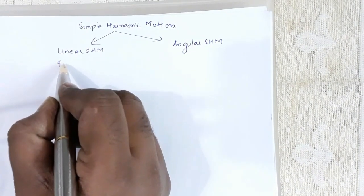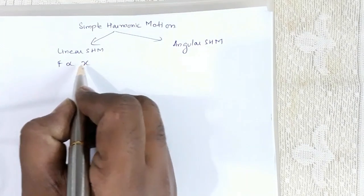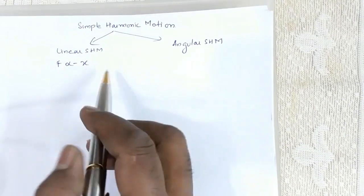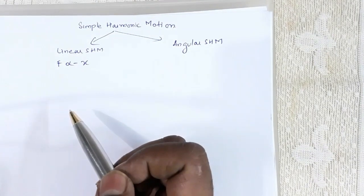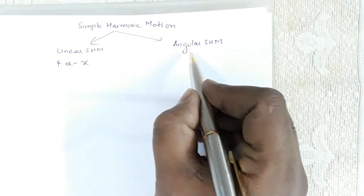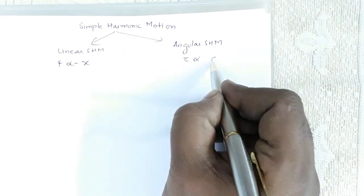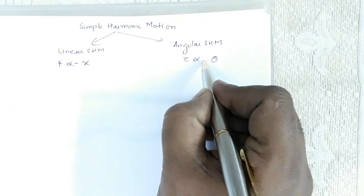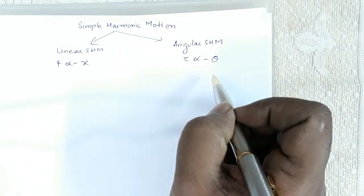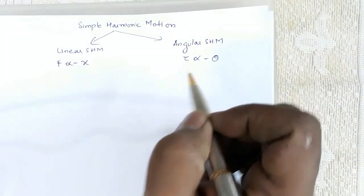In linear simple harmonic motion, the restoring force is proportional to the displacement from mean position, and the direction of restoring force is opposite to the direction of displacement from mean position. In angular SHM, the restoring torque is proportional to the angular displacement, and the direction of restoring torque is opposite to the direction of angular displacement, so you have a negative sign here.